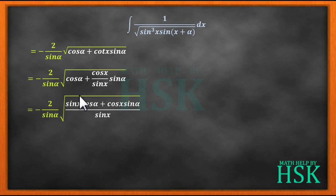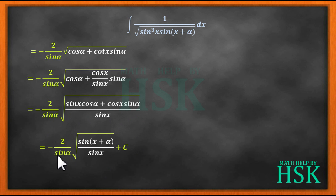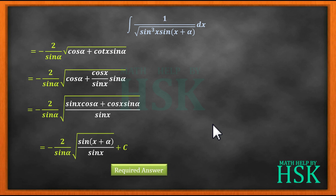We get minus 2 upon sin α times square root of (sin x cos α + cos x sin α) upon sin x. The numerator sin x cos α + cos x sin α is exactly the formula for sin(x + α). So the final answer is: minus 2 upon sin α times square root of sin(x + α) upon sin x, plus C.